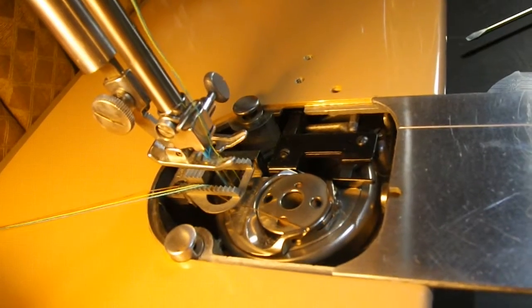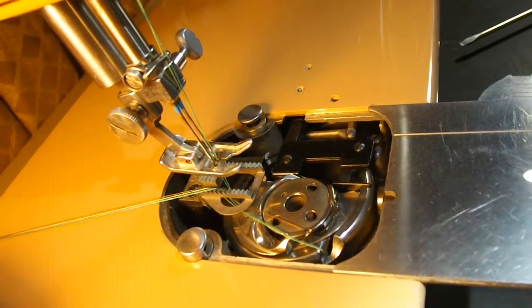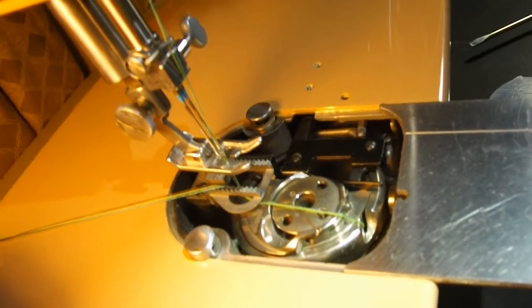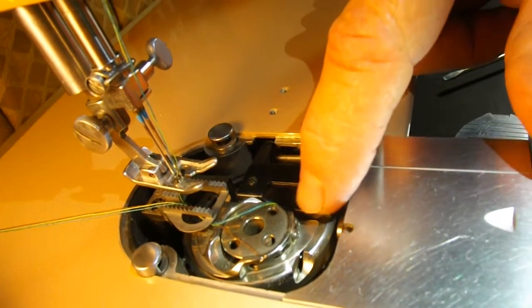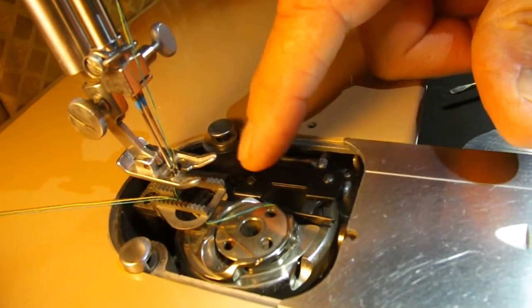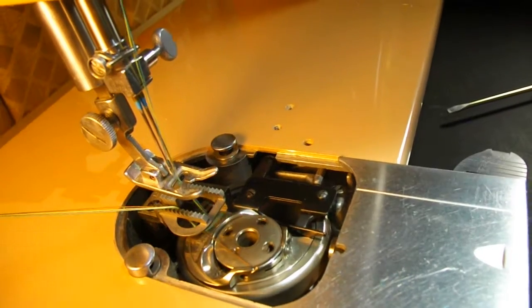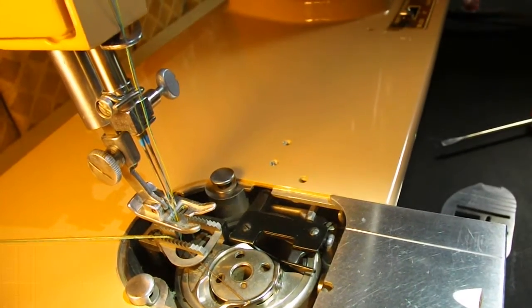Now the hook's going to come by right there and pick up those threads. And see it dragging it over the top of the bobbin there now? Then it's got to pass right through that gap. It's a little spring there. And if that is too tight, it'll hold those up and mess up the stitch. Then it continues around and wraps around the bobbin thread and forms the lock stitch.